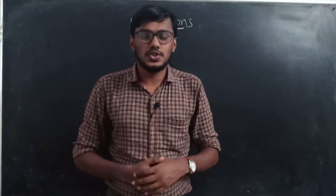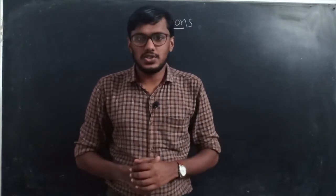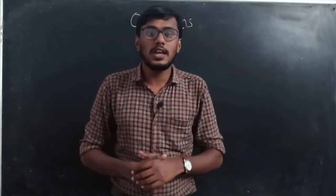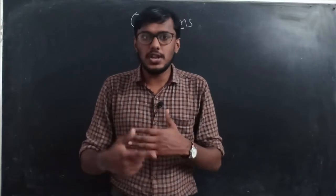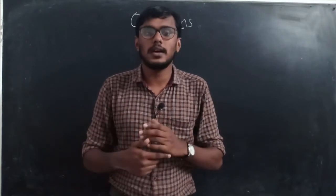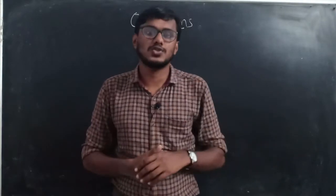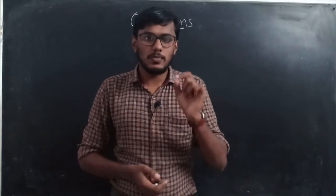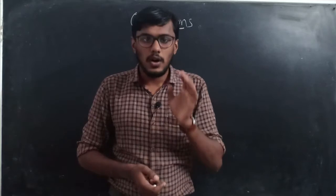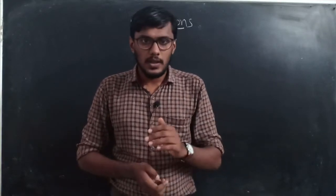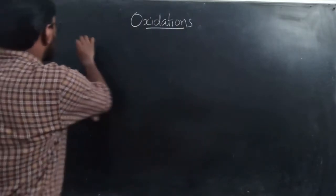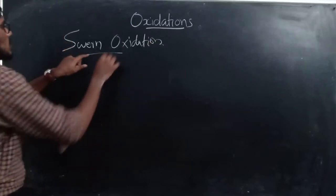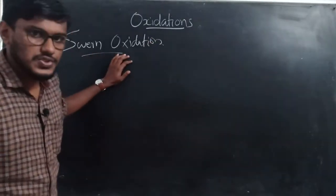Hi students, welcome to this new video. Let's continue with the oxidation reactions. In the last video we discussed the oxidation of alcohols into carbonyl compounds using DMSO, and the special case of DMSO and DCC (dicyclohexylcarbodiimide). In this video we are going to discuss the DMSO oxidation of alcohols in the presence of oxalyl chloride, which is known as Swern oxidation.